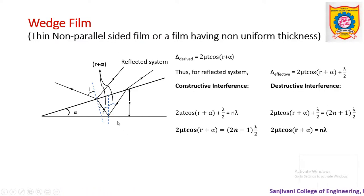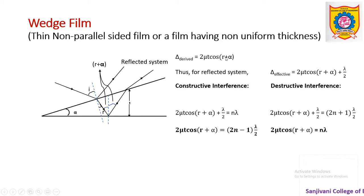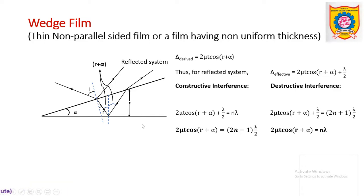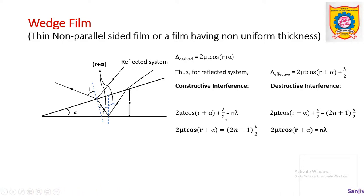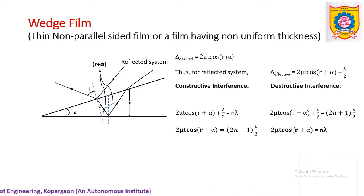We may also consider the transmitted system; those rays are not shown in the diagram but we can assume them. For the transmitted system, the derived path difference is also 2μt·cos(r+α). The only change is at the interface: for a transmitted system the interface is denser to rarer, and therefore according to Stokes' law there is no change in path difference. So the derived path difference remains the same, and we simply equate it with n·λ for constructive or (2n+1)λ/2 for destructive interference.